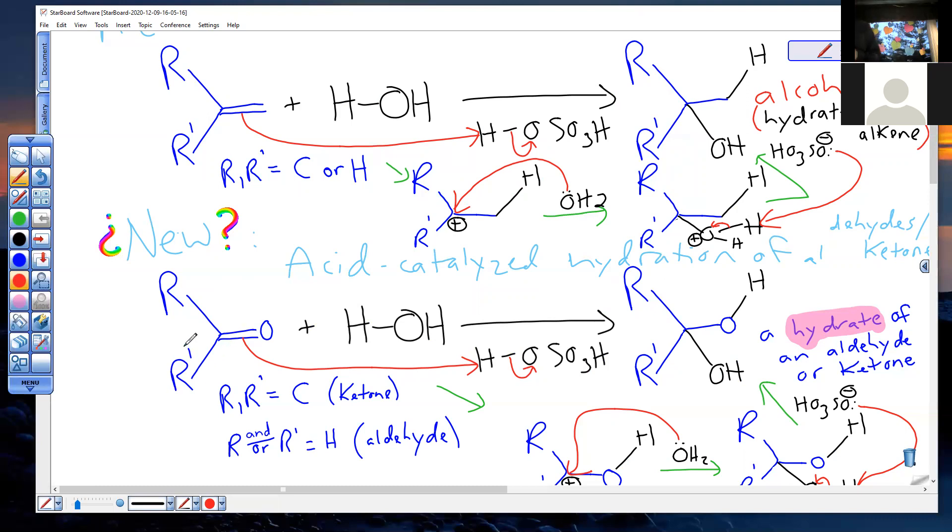If this was formaldehyde, we'd call this formaldehyde hydrate. If this was acetone, we would call this acetone hydrate. If this was benzaldehyde, we'd call this benzaldehyde hydrate. So keep that in mind when I ask you the question, what happens to an aldehyde or a ketone under acidic conditions when water is present? You're going to say, oh, I think I remember the start of today's lecture. He said something about making a hydrate. Remember that. It's coming up shortly.